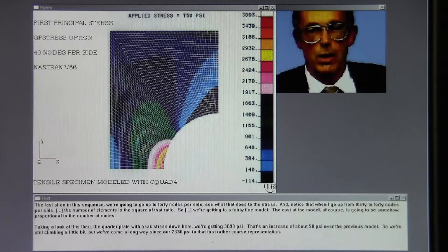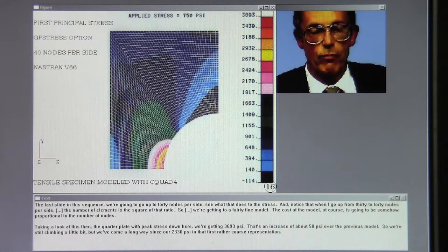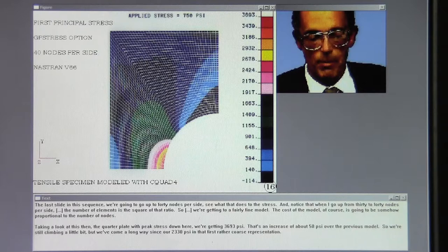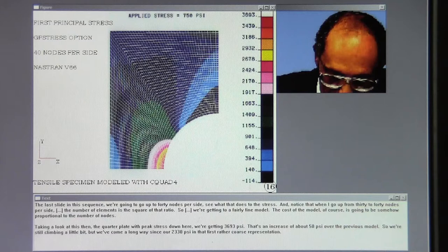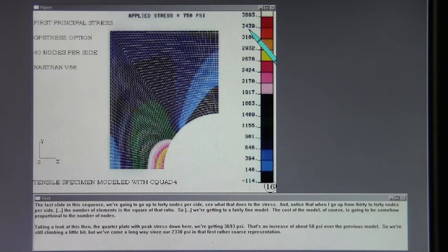The last slide in this sequence, we're going to go up to 40 nodes per side, see what that does to the stress. And notice that when I go up from 30 to 40 nodes per side, I'm really, the number of elements is the square of that ratio. So we're getting to a fairly fine model. The cost of the model, of course, is going to be somehow proportional to the number of nodes. Taking a look at this then, the quarter plate with the peak stress down here, we're getting 3693 psi. That's an increase of about 50 psi over the previous model. So we're still climbing a little bit, but we've come a long way since our 2330 psi in that first rather coarse representation.